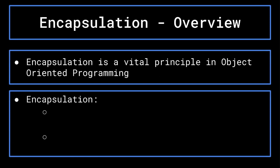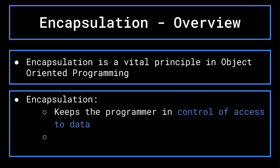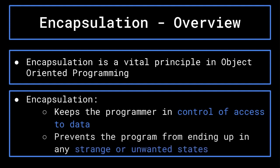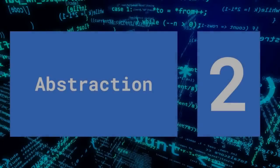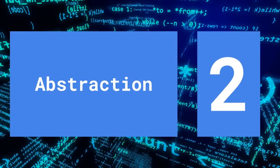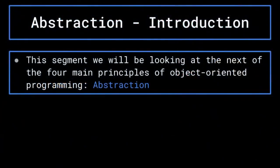Overall, encapsulation is a vital component of object oriented programming that allows the programmer to maintain control of their data and to keep their program from ending up in any unwanted states. In this next section, we are going to be discussing the next of the four main principles of object oriented programming: abstraction.